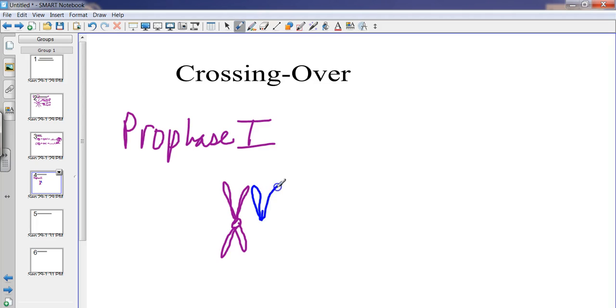And this is when the homologous chromosomes are lined up in a tetrad. So here's one chromosome and here is the other chromosome. Homologous chromosomes, you get one from mom, one from dad.